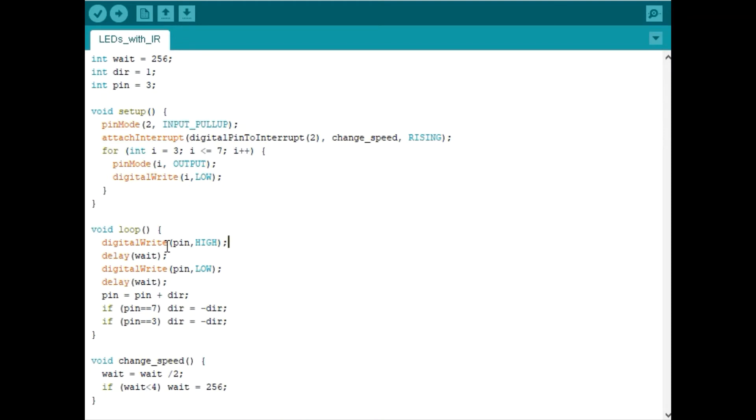Here in the main loop we will take our pin which is number 3 to begin with and we will write high to turn the LED on. We will have a short wait and then turn the LED off with a low command and then another short wait. Then we will increment our pin number.